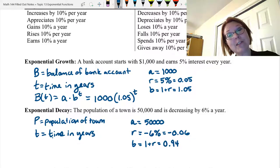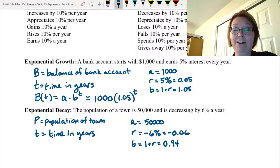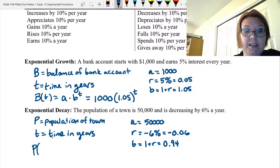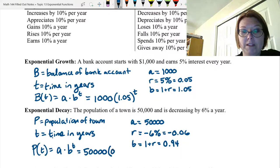In other words, when we lose 6% a year, we have 94% remaining. Now we should be able to use that to write a model for our function. We want to have P of T equals, and again, it's going to be A times B to T. So in this case, that would be 50,000, left parentheses, 0.94, right parentheses, to the T power.